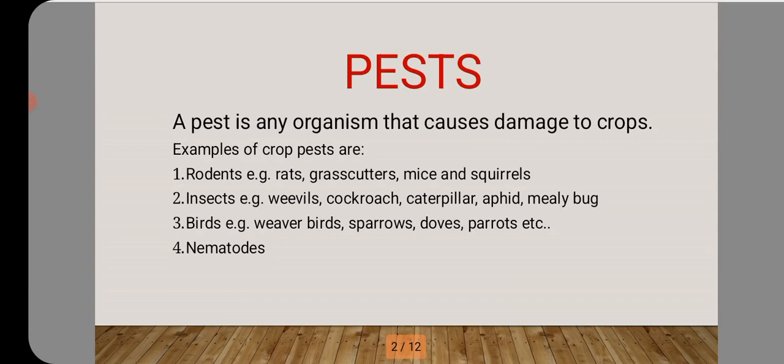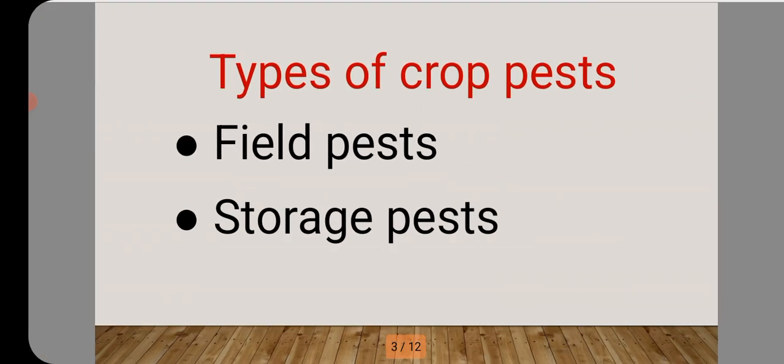In a nutshell, a pest is any organism that causes damage to crops, or organisms that destroy crops. Let's look at the types of crop pests. There are two types of crop pests: field pests and storage pests.